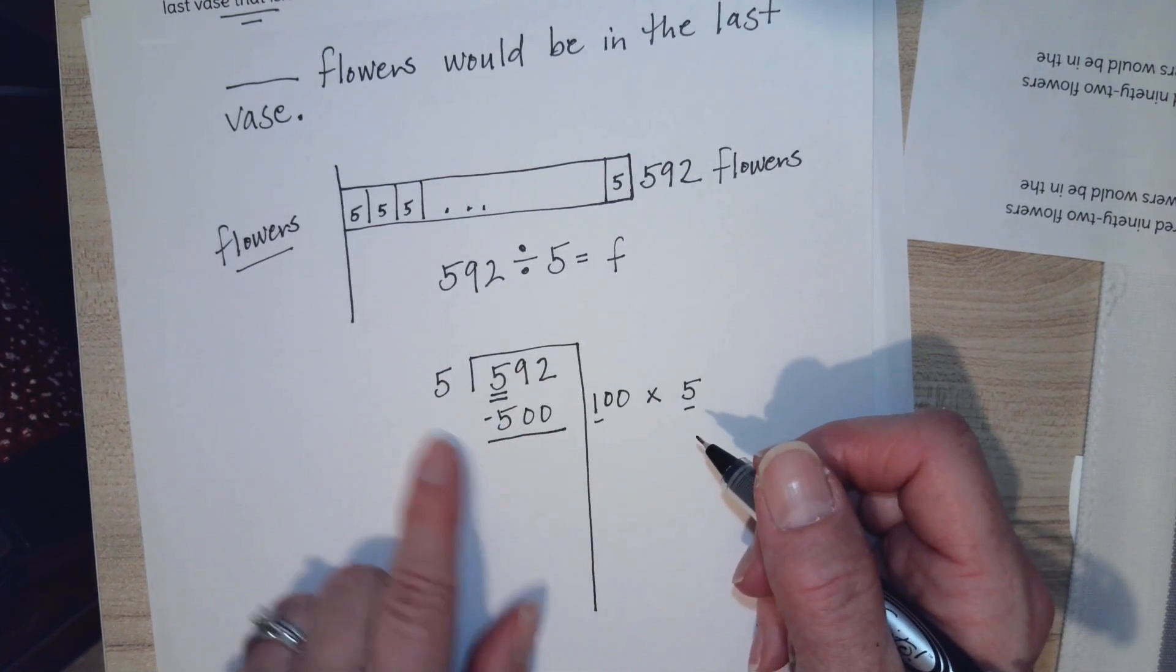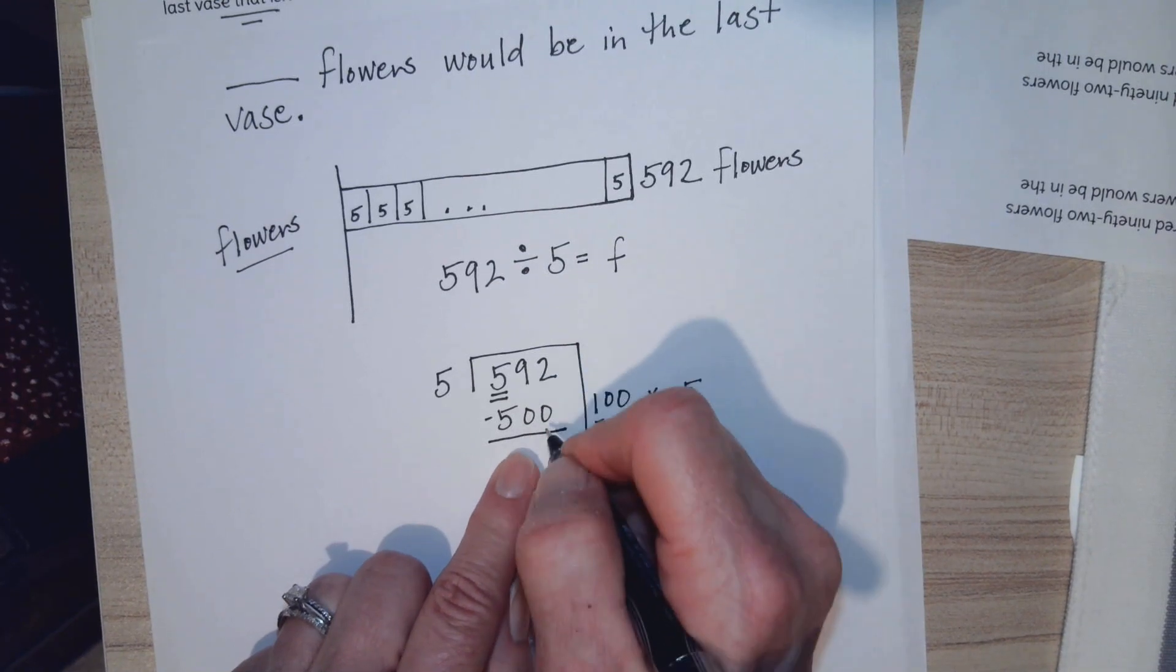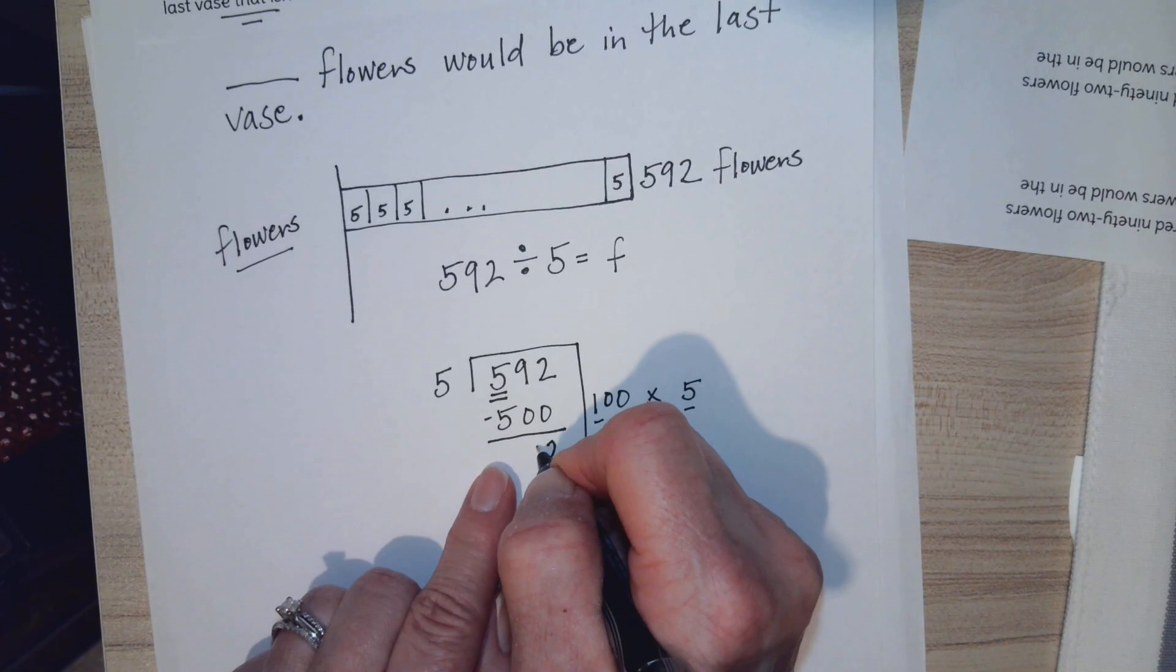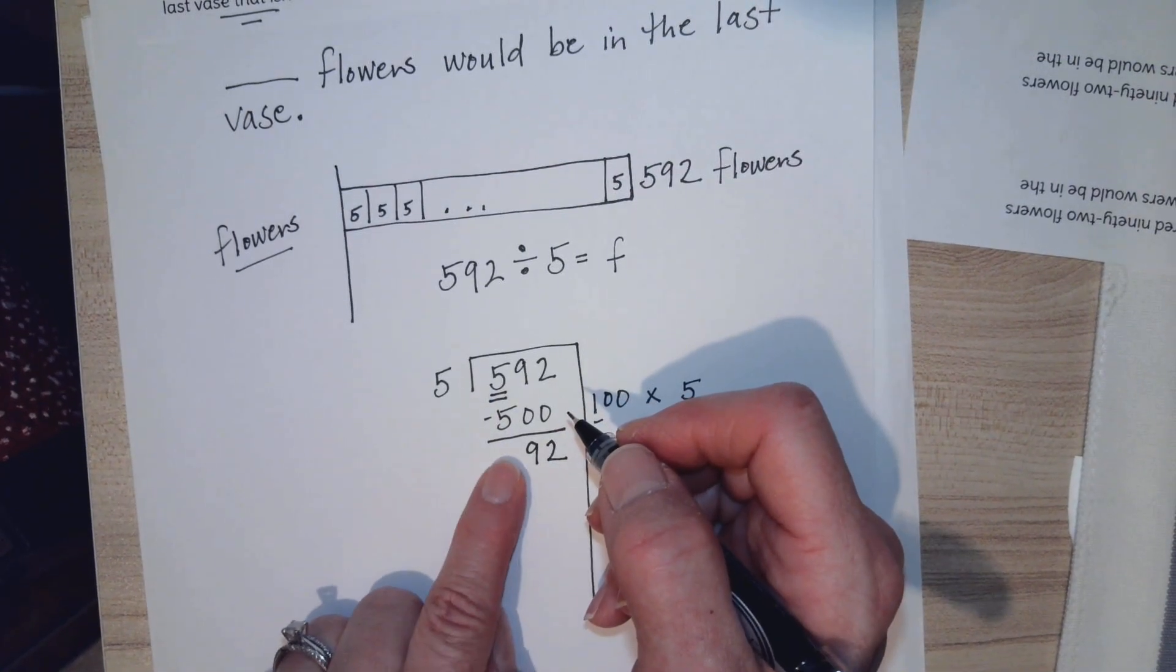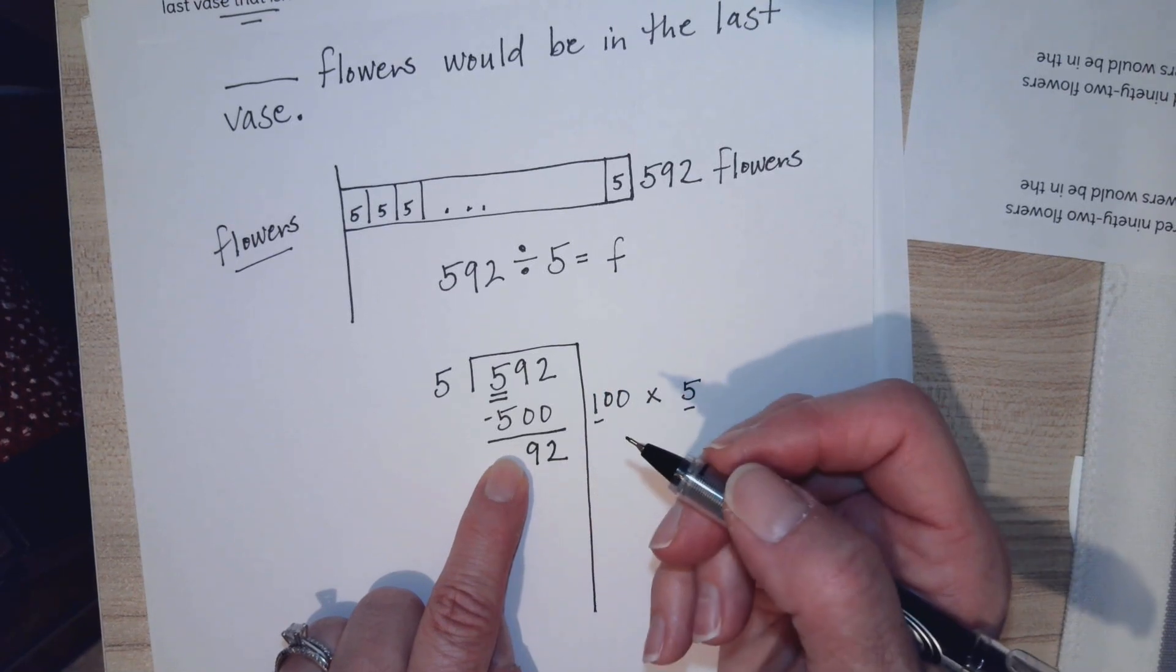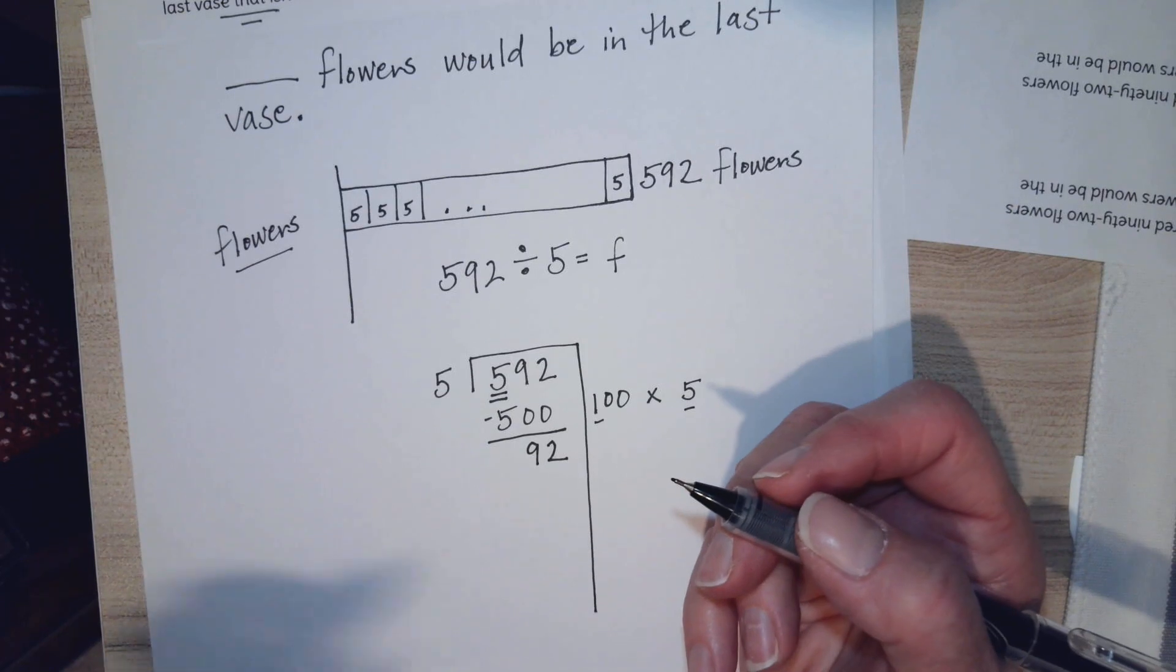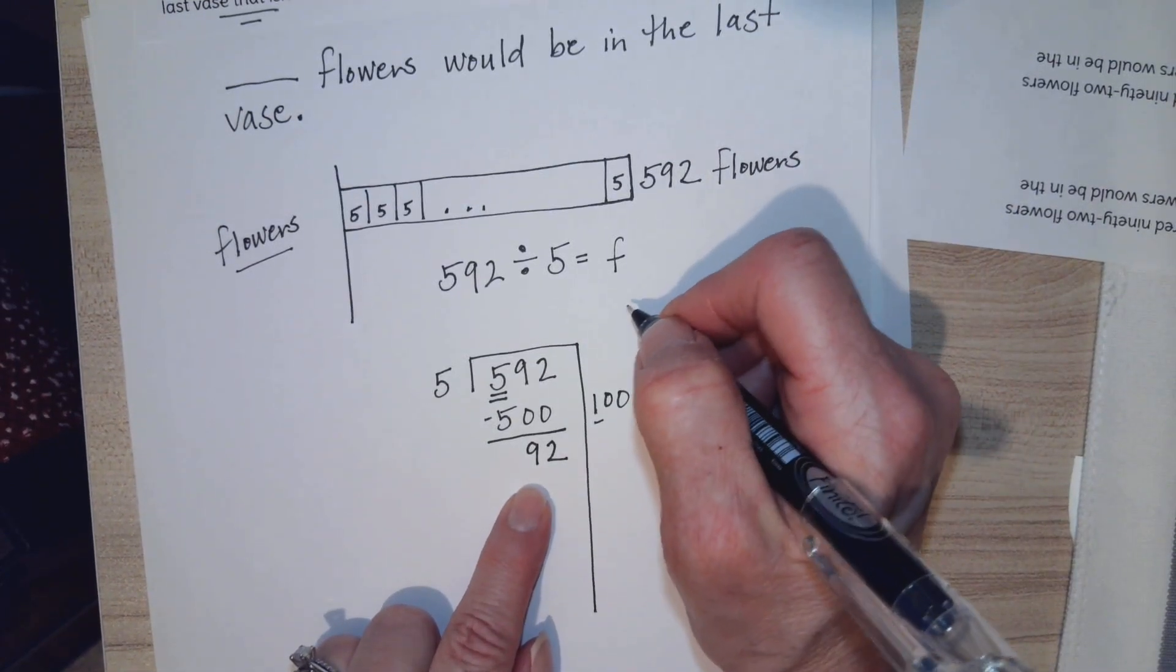So now I have to take 100 times 5 is 500. My next step is to subtract. 2 minus 0 is 2, 9 minus 0 is 9, and 5 minus 5 is 0. But now I don't have hundreds, so I'm thinking of tenths.